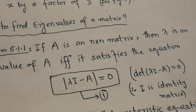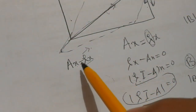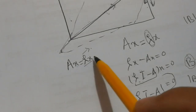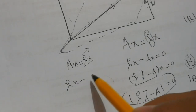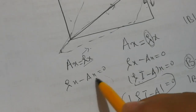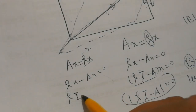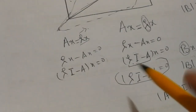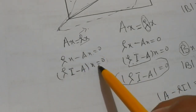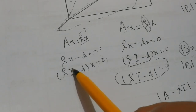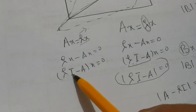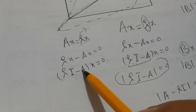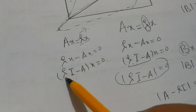To derive this equation, recall that we are interested in vectors which do not change direction under a transformation, so Ax = lambda x. Rearranging gives lambda x minus Ax = 0. Taking x common gives (lambda I minus A)x = 0. We need the identity matrix I here because lambda is a scalar and cannot be directly subtracted from matrix A — the identity matrix converts the scalar into a matrix so the subtraction is valid.